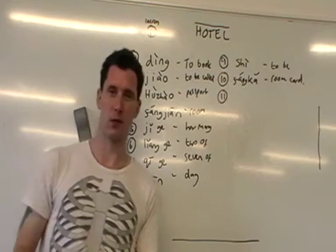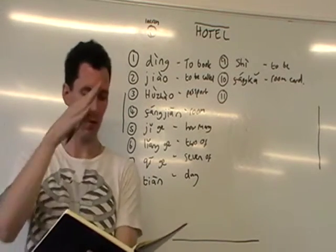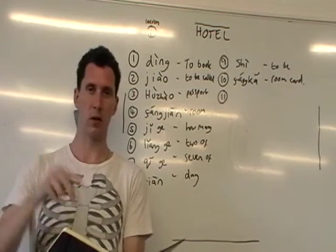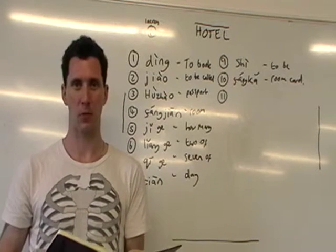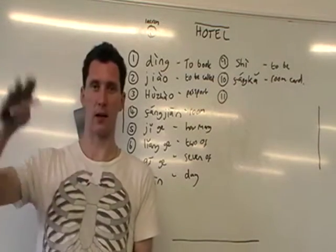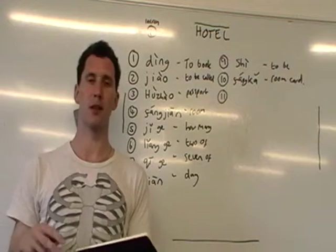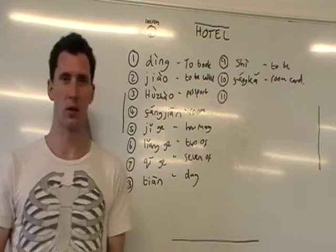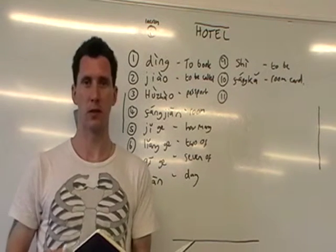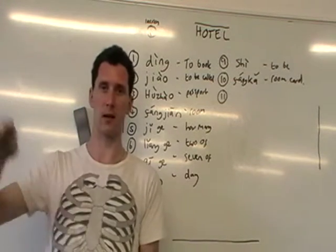Last phrase: 'These are your room cards.' Everything's gone well and the receptionist hands you your room cards. Zhè — this or these — shì — to be — nǐmen — your — de, which means an attribute of something, so nǐmen de means 'something of yours' — and then fángkǎ, room cards. So zhè shì nǐmen de fángkǎ — these are your room cards.